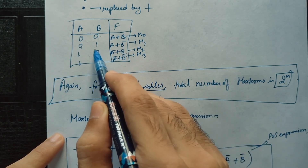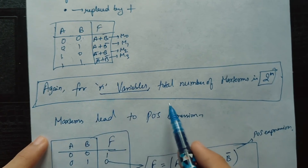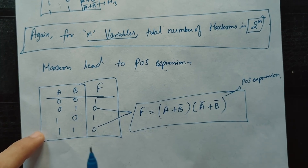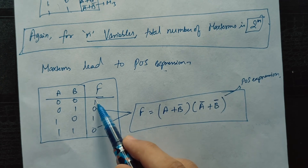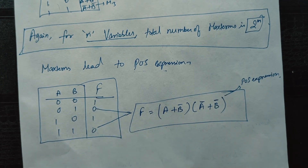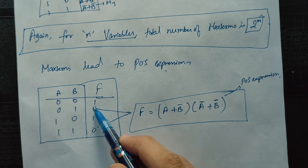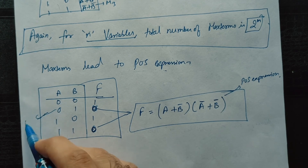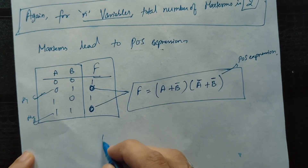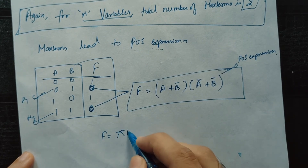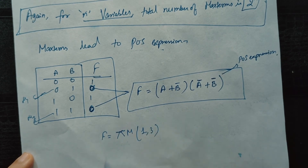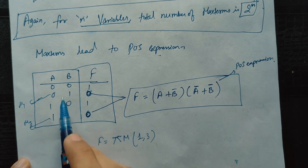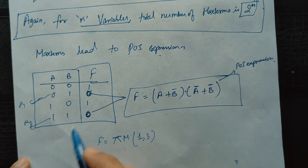Again, for n variables, the total number of max terms is 2 to the power n. Max terms lead to Product of Sums expressions. For POS, we look at where the function is 0 — not 1 as in min terms. In our example the function is 0 at rows 1 and 3, so we use max term 1 and max term 3. The representation is f = ΠM(1,3) = (A+B-bar)·(A-bar+B-bar).